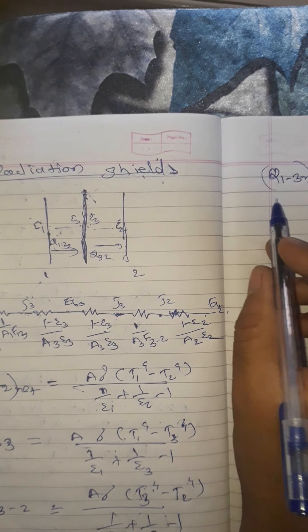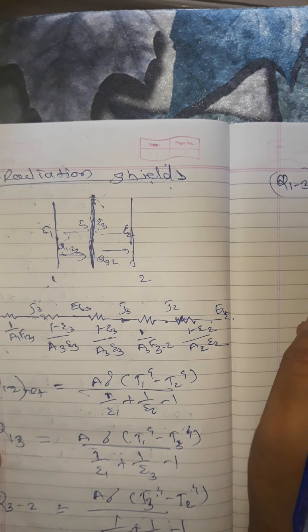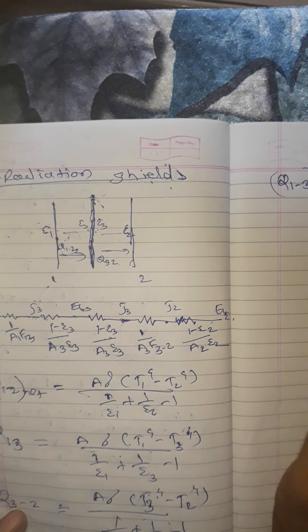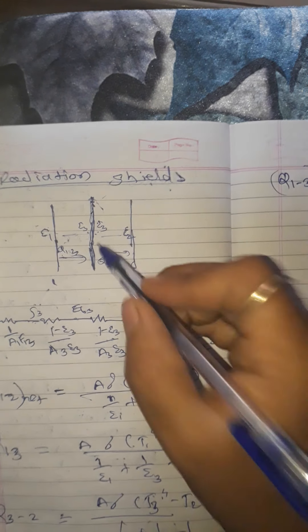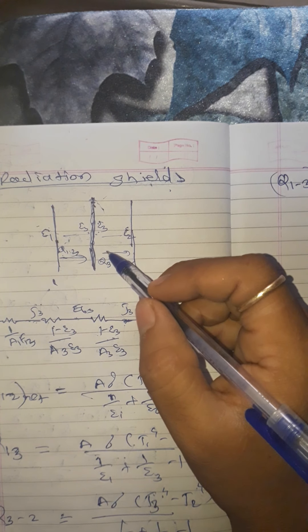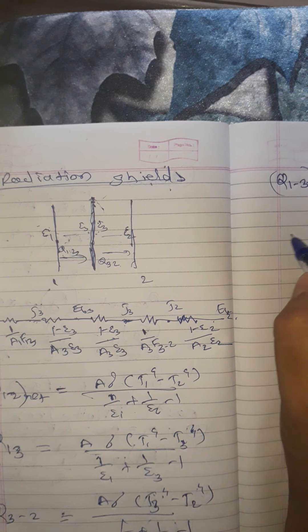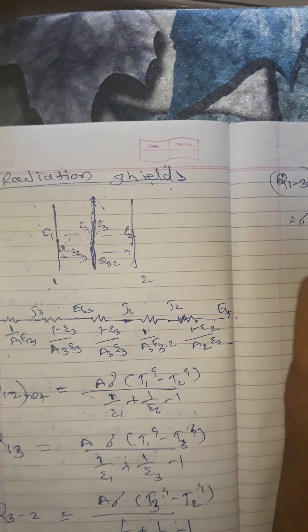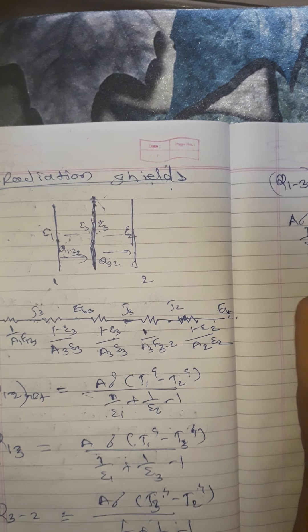We have written Q 1 to 2, then Q 1 to 3, then Q 3 to 2. The net Q 1 to 3 is equal to Q 3 to 2, because the radiation shield does not absorb the energy — it only stops the energy. Then the energy transfer from surface 1 and surface 2 are equal. We can write: A sigma T1 raised to 4 minus T3 raised to 4.